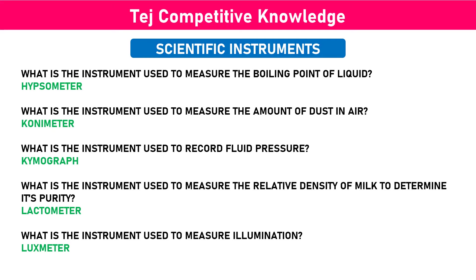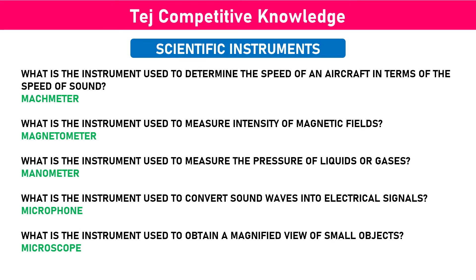What is the instrument used to measure illumination? Luxmeter. What is the instrument used to determine the speed of an aircraft in terms of the speed of sound? Magneter.